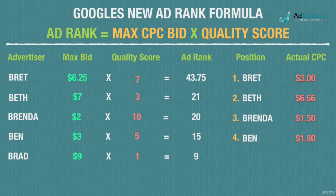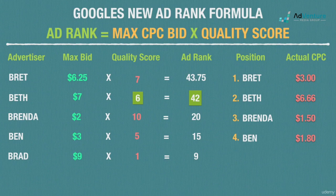Say Beth improves her quality score from 3 to 6 — her ad rank becomes 42 and she stays in position 2. But look at her actual CPC: dividing 20 (the ad rank to beat) by 6 (her new quality score) gives $3.33 — half of what she was paying before. By increasing her quality score just a few points, she drastically lowered her actual CPC.